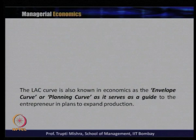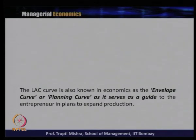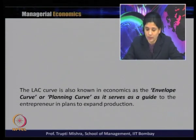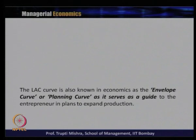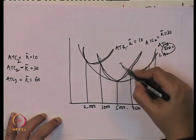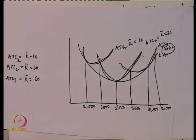This is how the short-run and long-run average cost curves are related. The long run average cost curve is also known as the planning curve or the envelope curve, because it serves as a guide to the entrepreneur in planning production expansion. It is called the envelope curve because in the long run, the LAC essentially envelops the different short-run average cost curves — SAC1, SAC2, and SAC3.